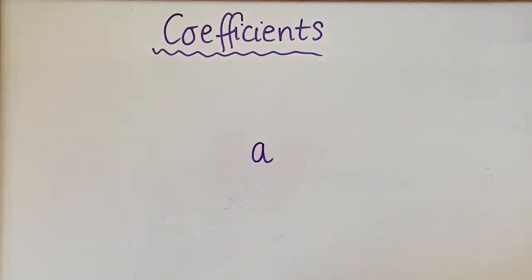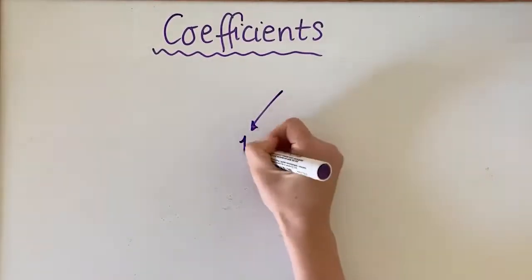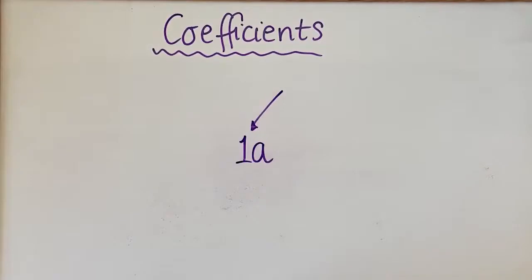Sometimes it'll look like there's no coefficient sitting in front of your variable, but in this circumstance even though we can't see it there's actually a number 1 there. So if you see nothing in front of it then it's a 1.